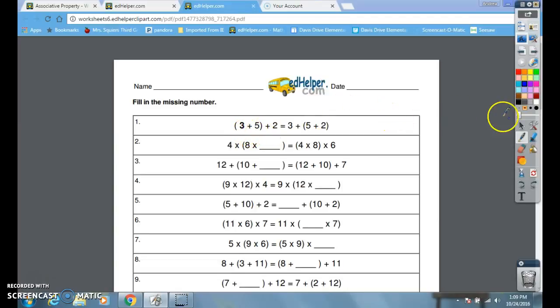Hi boys and girls, tonight we're going to talk about the associative property. Last night we talked about the commutative property. You notice that there are three numbers on the left side of the equal sign and three numbers on the right side of the equal sign.